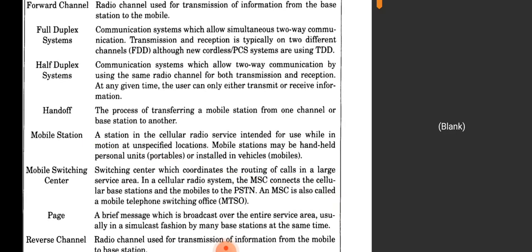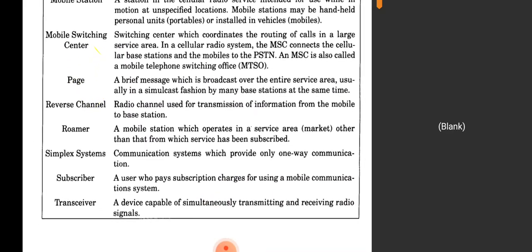A page is a brief message broadcast over the entire service area, usually in a simulcast fashion by many base stations at the same time. A reverse channel is a radio channel used for transmission of information from mobile to base station — forward channel goes from base station to mobile, reverse channel goes from mobile to base station. A roamer is a mobile station which operates in a service area other than that from which the service has been subscribed — this is why we incur roaming charges when moving from one location to another.